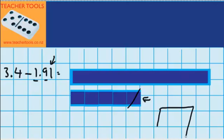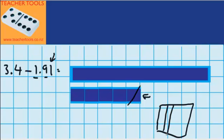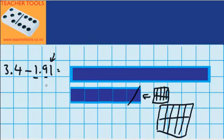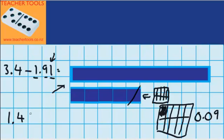Let's draw a picture to show what that looks like — I'm blowing this up, it's not really this size. This is 1 tenth split into 10 hundredths. The question says I have to take away one hundredth, so I only have to take away that little bit there, leaving me with a lot of hundredths — in fact 9 hundredths. So now you can see what I'm left with: 1 whole, 4 tenths and 9 hundredths. 3.4 minus 1.91 equals 1.49.